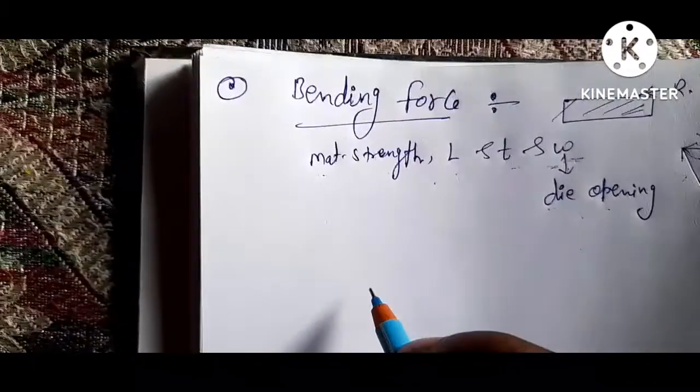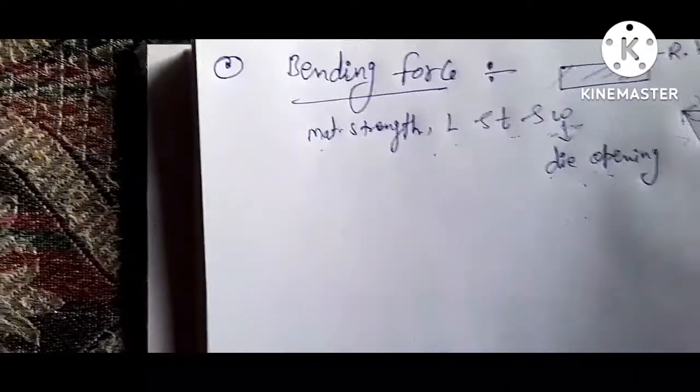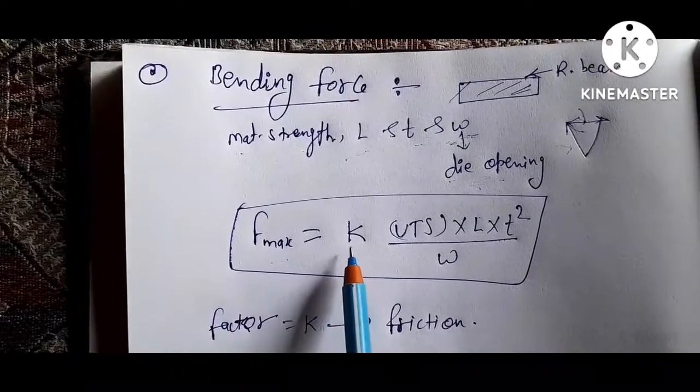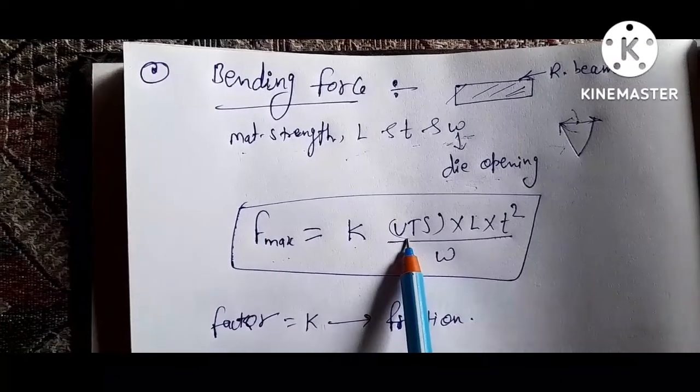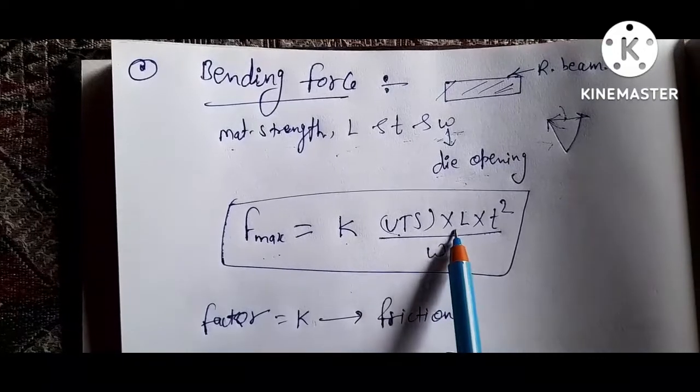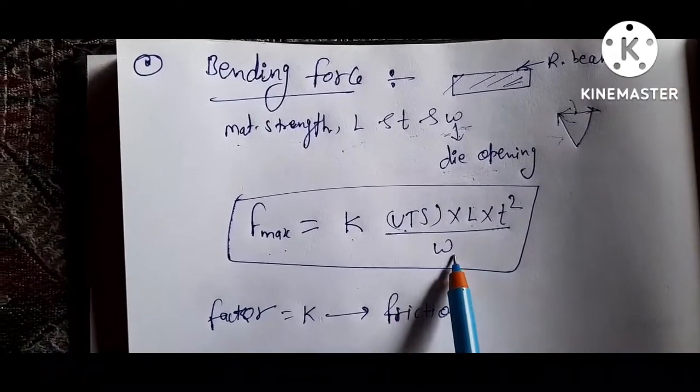So maximum bending force equals K times ultimate tensile strength UTS multiply L multiply T square divided by die opening width W.